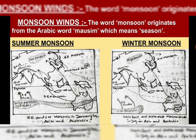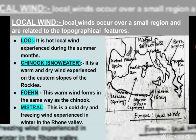Remember, the winter monsoon is also known as the northeast monsoon because the direction of wind this time is northeast, whereas in summer monsoon the direction of wind is southwest.